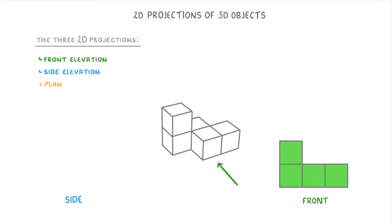Meanwhile the side elevation is the same idea but this time it's the view you'd have by looking at it from the side over here. So this time you'd just see these 3 squares, and so it would look like this.